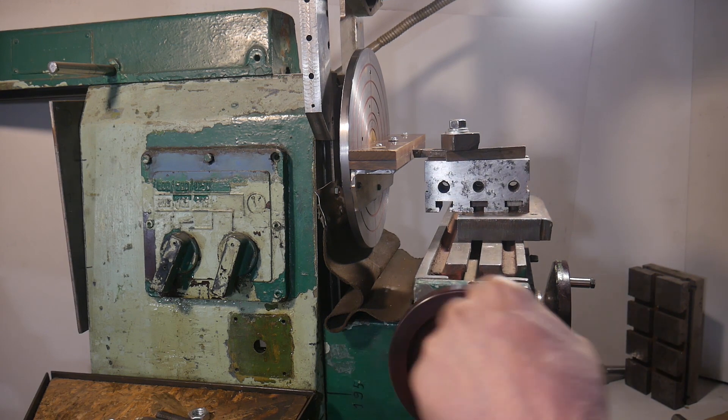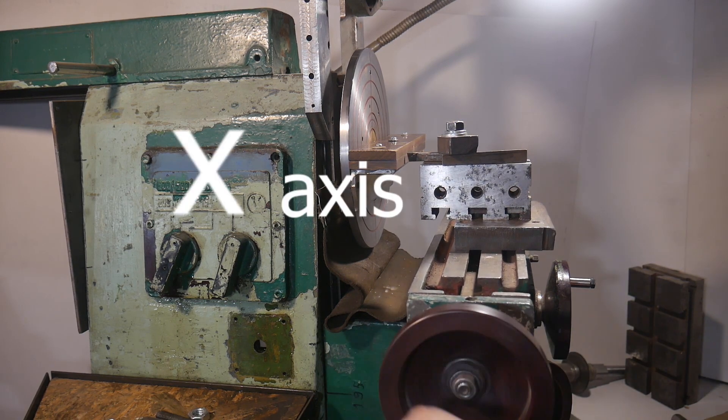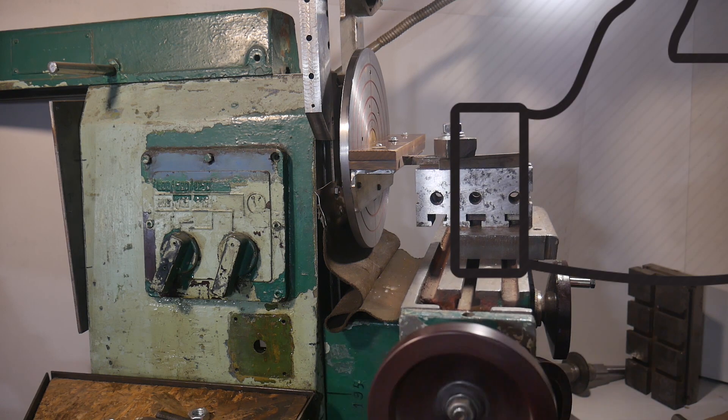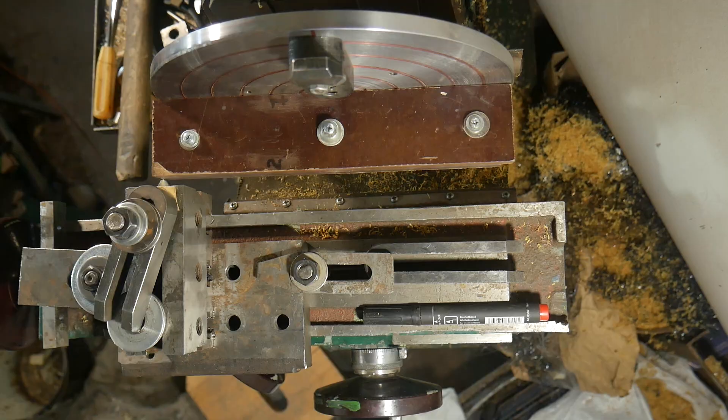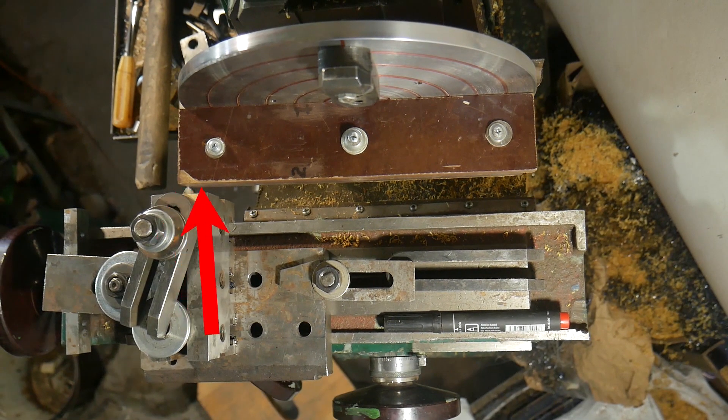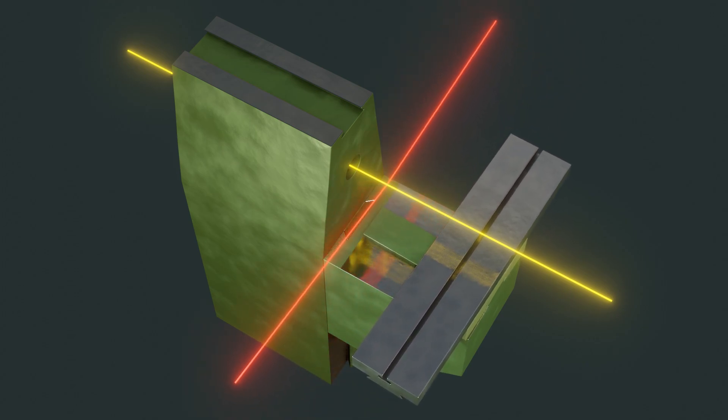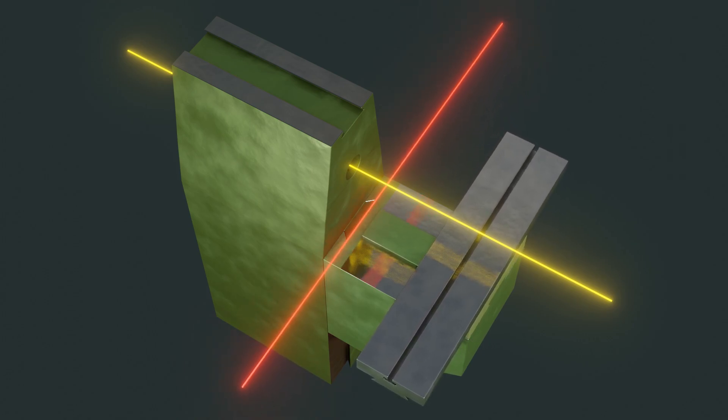Now the cutter will move along the X-axis. As a result we will find out at what angle the X-axis is located to the axis of rotation of the spindle.